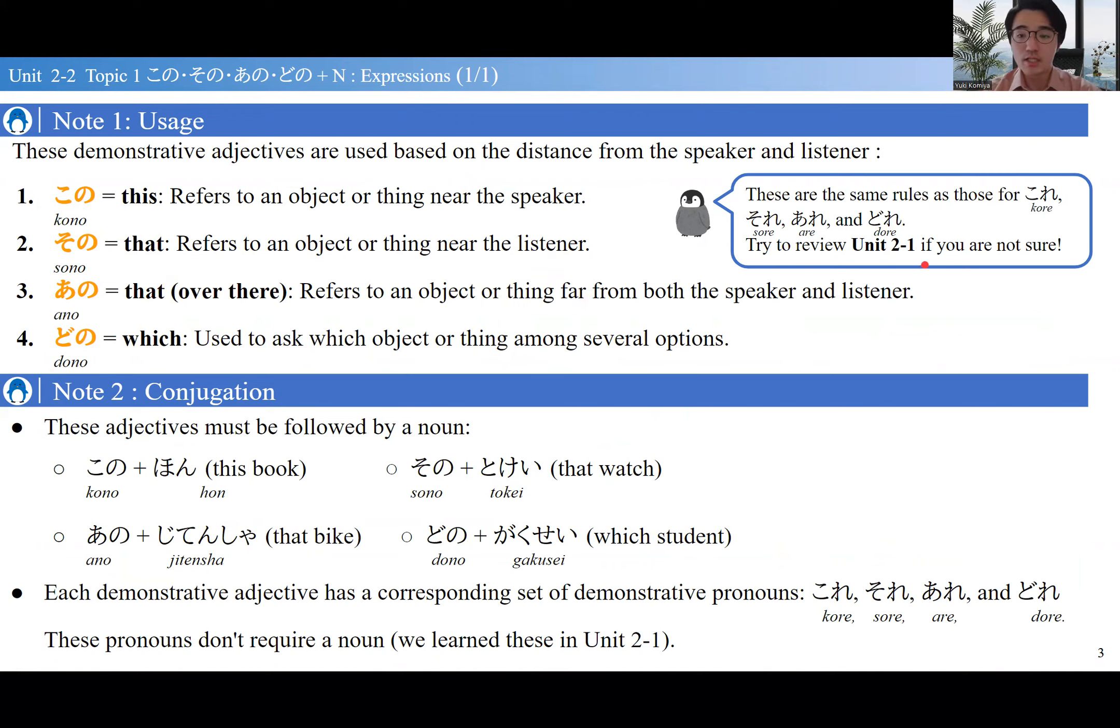For example, if I hold my phone, then 'this phone'—このスマートフォン, このスマホ—is something very close to the speaker. その will be for objects that are near the listener.